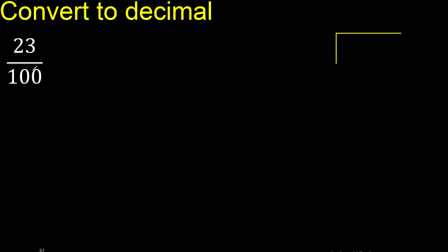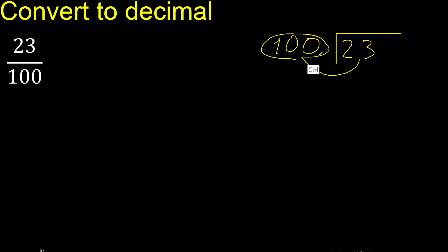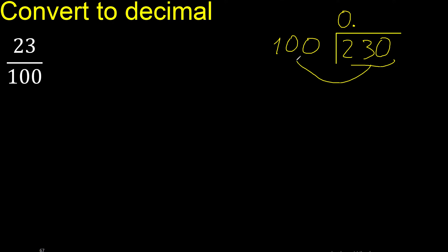23 divided by 100. 23 is less than 100, therefore complete — always complete with 0. Here the 0 point is not less.